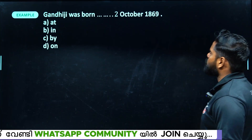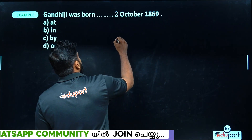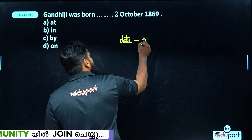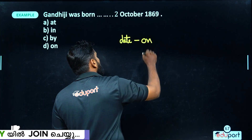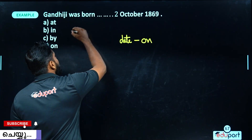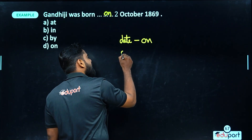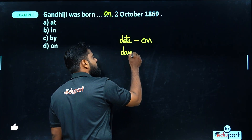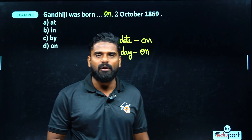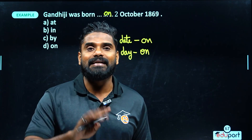Gandhiji was born on 2nd October 1869. When we have a date, we use 'on'. Days like Monday, Sunday, Tuesday — we use 'on'. She goes to church on Sundays.